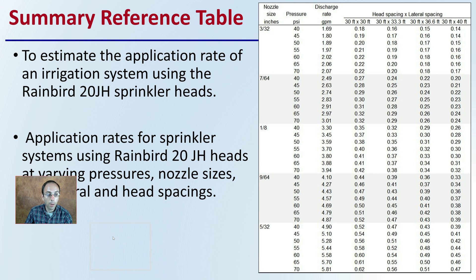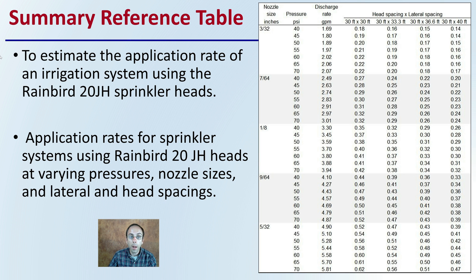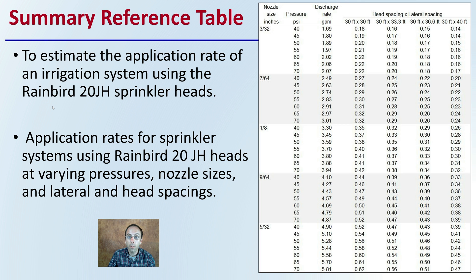Now for a summary reference table. To estimate the application rate for an irrigation system, again using the Rainbird 20JH sprinkler heads, this table shows application rates at varying pressures, nozzle sizes, and lateral and head spacing. This is just applying those calculations and putting them into a neat, organized table. If you're not using these specific sprinkler heads, use it as a general guide and see where yours fall. This particular head is mentioned because a clean, organized data table was available to provide.